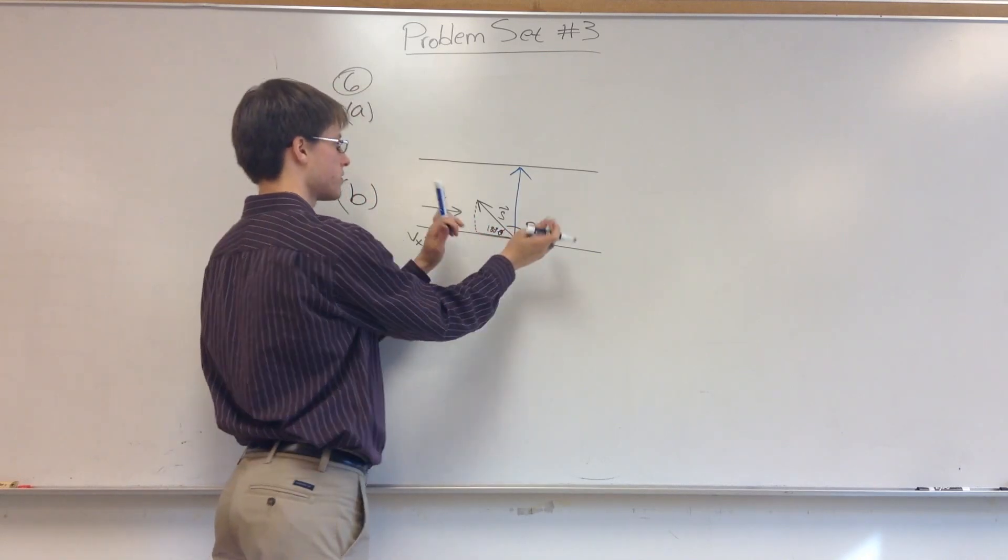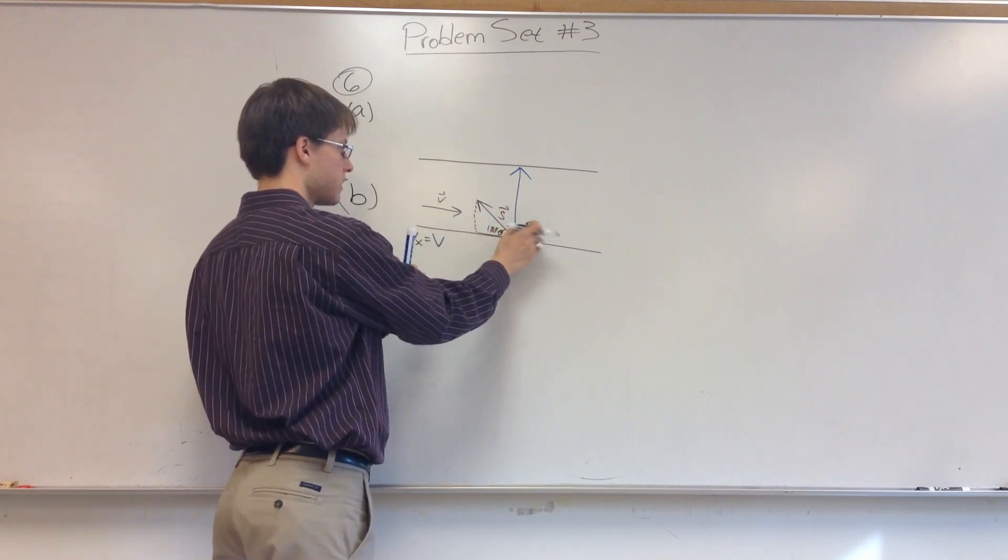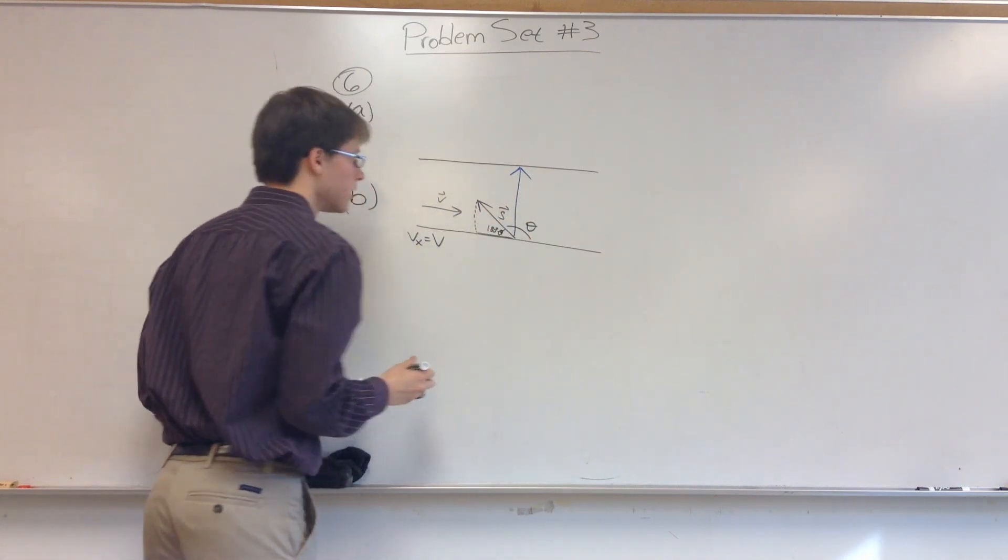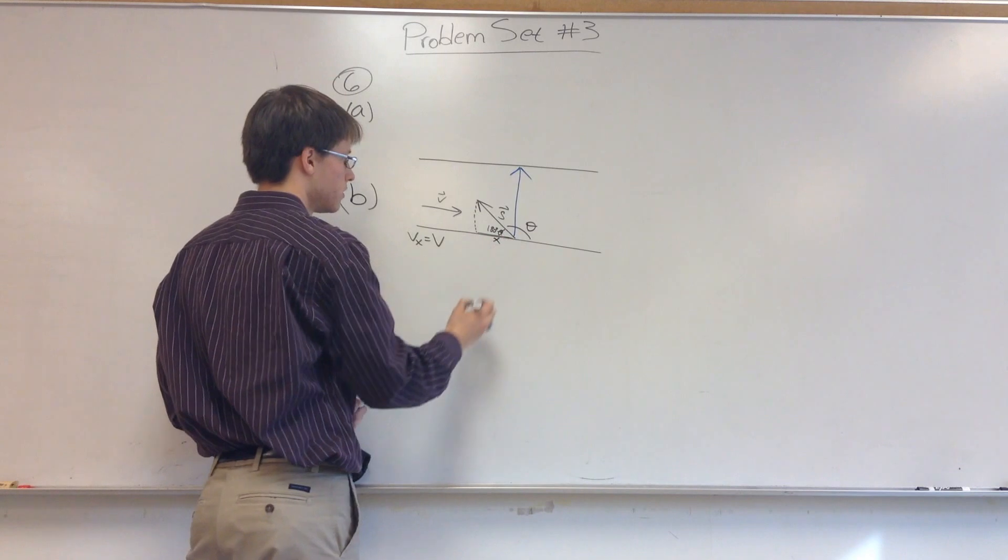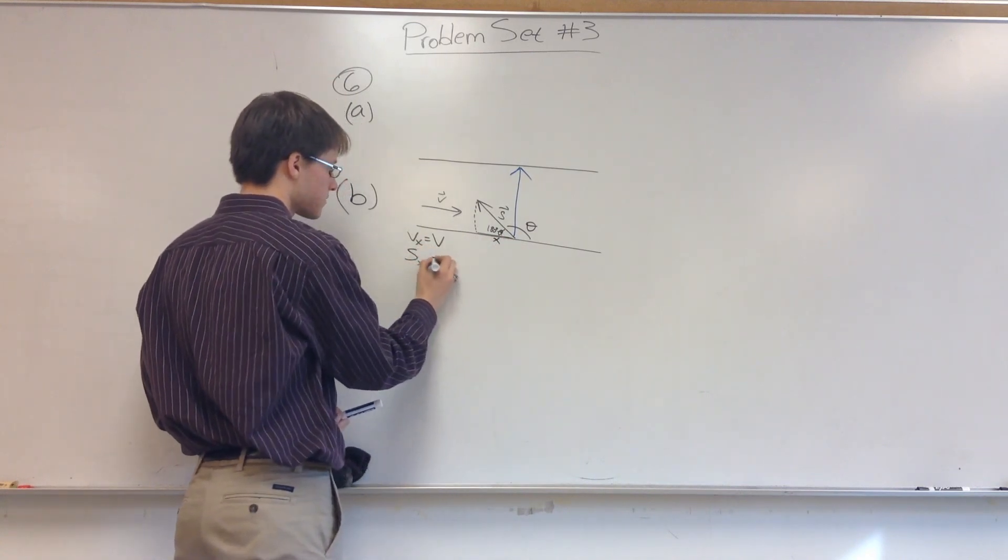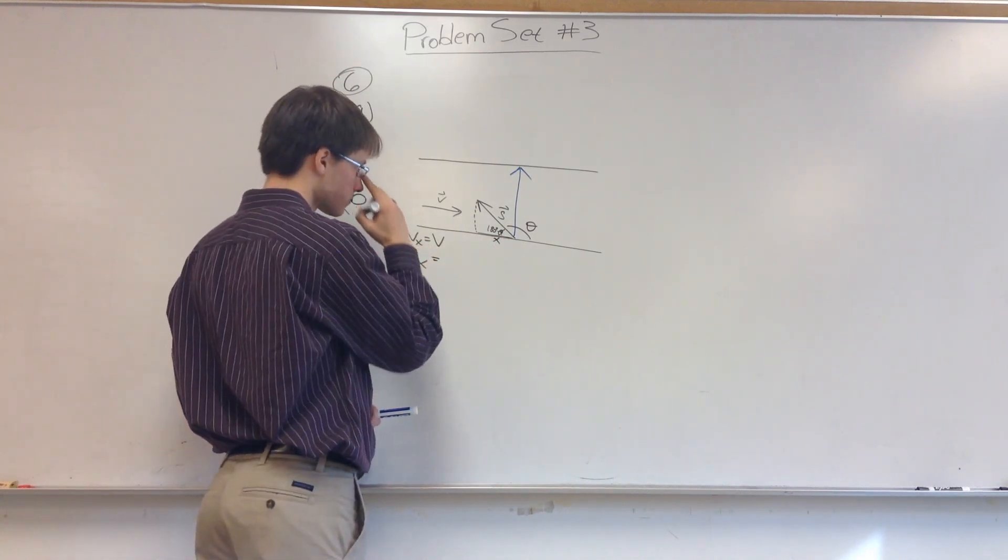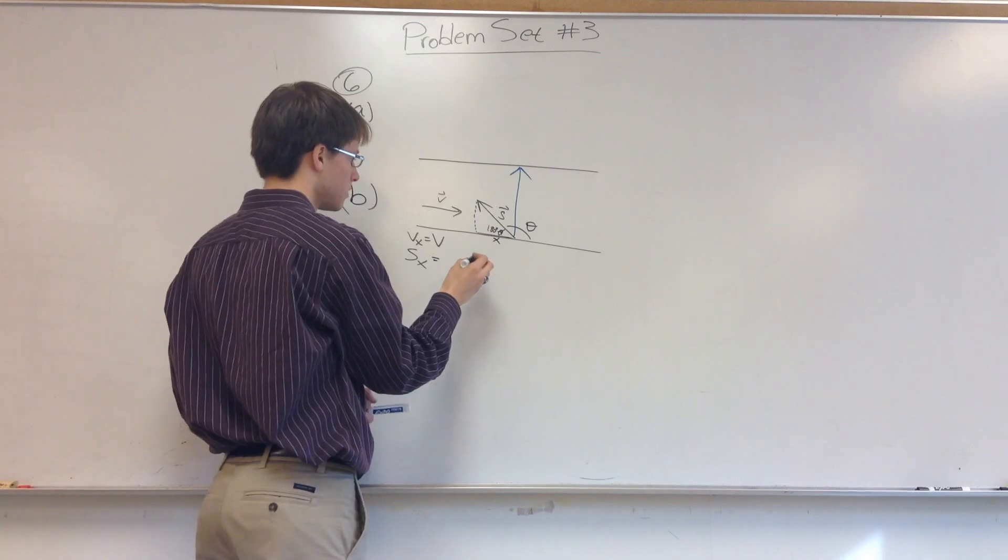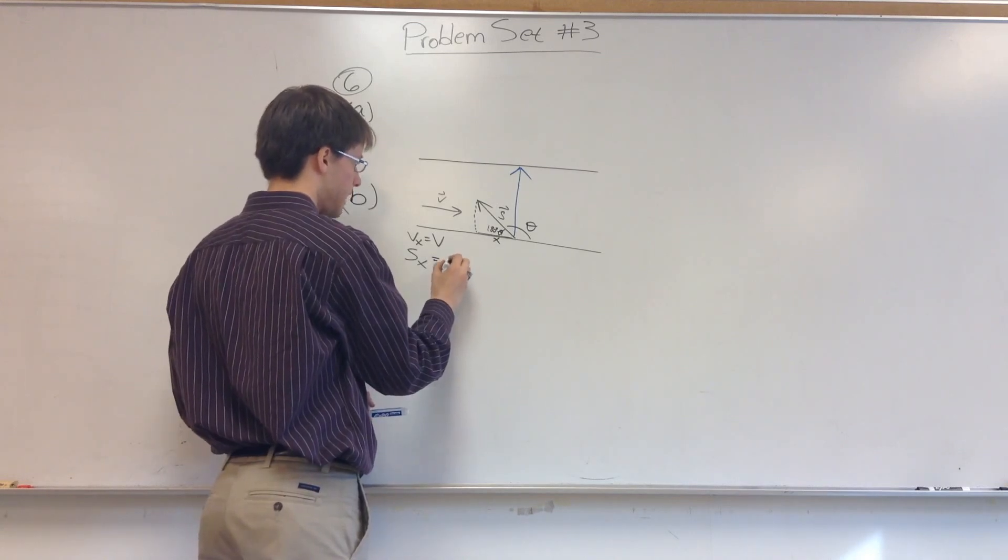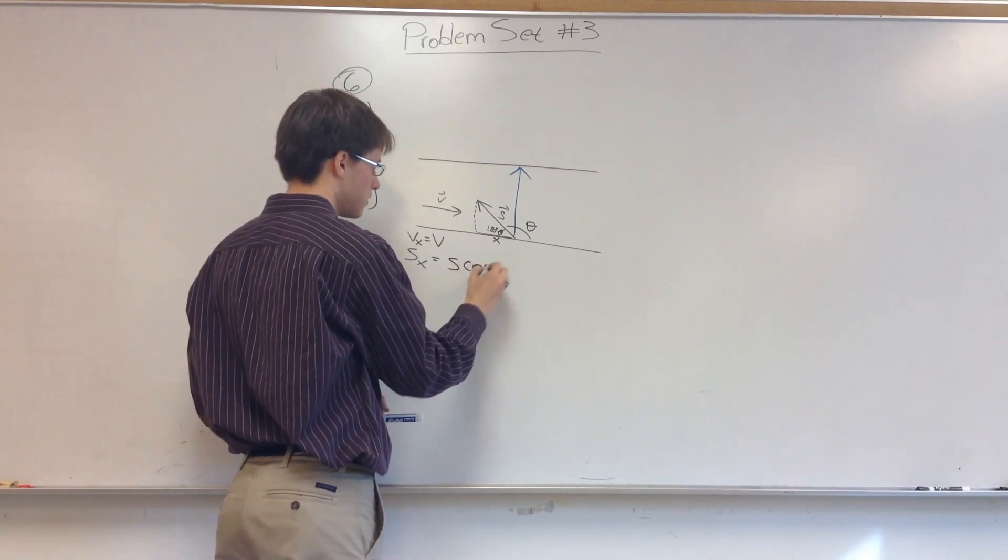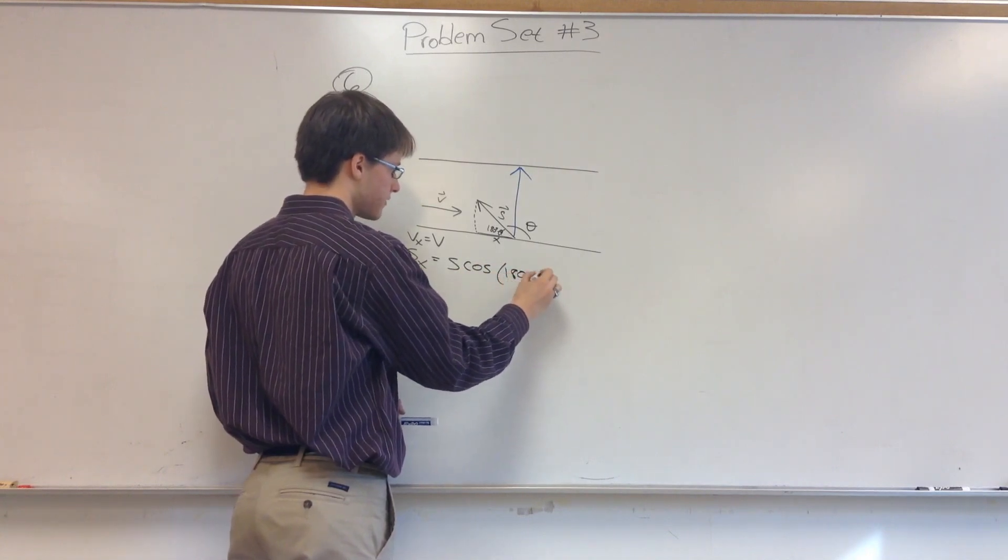and that's from our rules of geometry. This whole thing is 180. That's theta, so that means that's 180 minus theta. So the X component is going to be this one. So SX in this scenario is equal to S times the cosine of 180 minus theta.